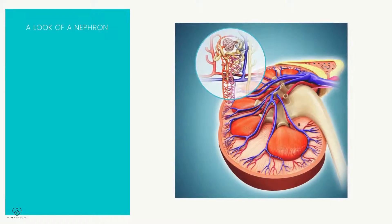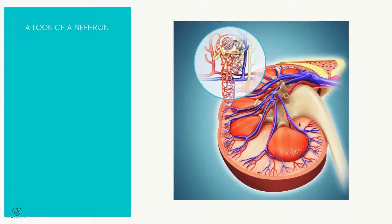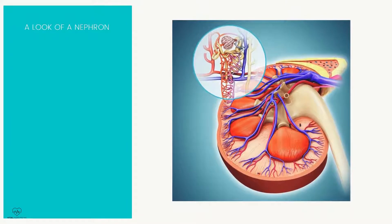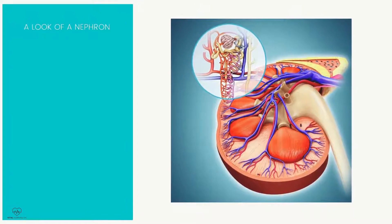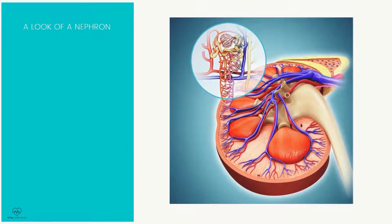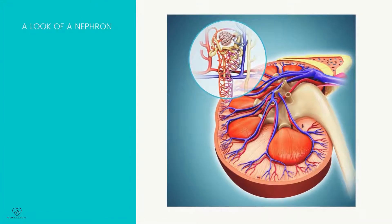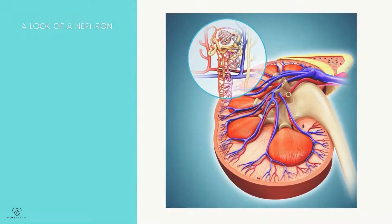On top of the kidneys are the adrenal glands, which influence blood pressure, sodium, and water retention.